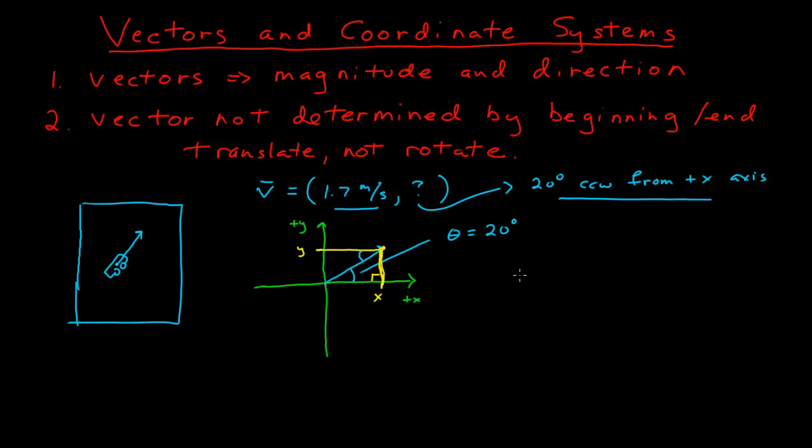And so, if I look at what those are, the x coordinate, then, of the point of the tip is equal to, since this is a right triangle, the length of the hypotenuse, which is 1.7 times cosine of 20 degrees, is the x coordinate.